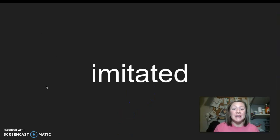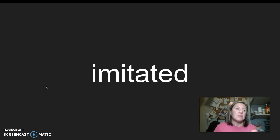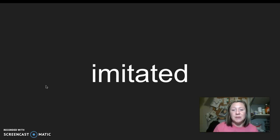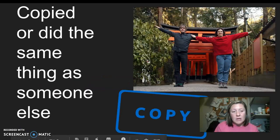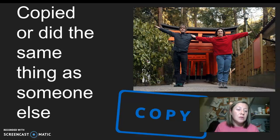Our next word is imitated. I say it, you say it: imitated. Let's clap the syllables in imitated: I-mi-ta-ted. Four syllables in imitated. Our root word or base word of imitated is imitate. So when you've imitated someone, you're copying or doing the same thing as someone else — you're doing what someone else is doing, you're imitating them. I say it, you say it: imitated.